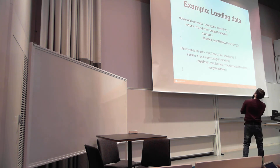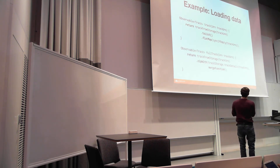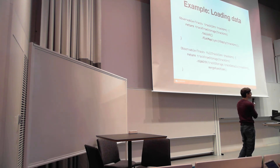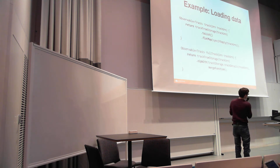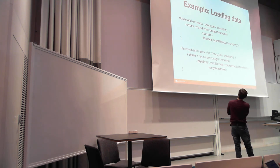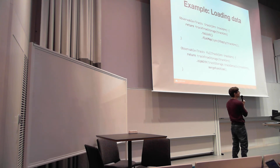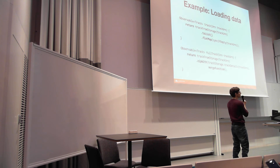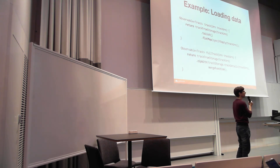We then call the toList operator on it, which means if it receives one item it returns a list of one element, but if it receives no item it returns an empty list. This is nice because collections like this are easier to work with than the presence or absence of an item. Then we can use the flatMap operator to turn this into an entirely different sequence. If the list was empty because it didn't find the track in local storage, we trigger a metadata sync, fetch it from the API, store it in local storage, and then try again to load it.